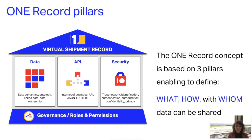The pillars of OneRecord are three. The first is data, which defines what is shared. Then there is the API, which defines how we share the data. And then security, which defines with whom we share the data. Another layer is governance, which enables roles and permissions in this ecosystem. All these layers together enable the virtual shipment record.